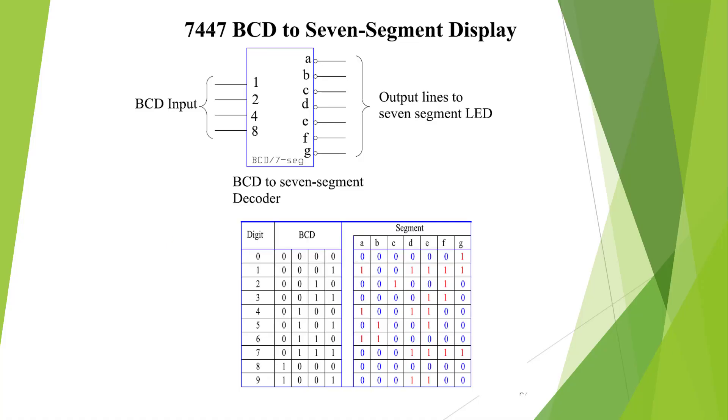This is the 7447 BCD layout for binary input, BCD 0 to 9, and we put the binary weighted positive values in here, and internally, it actually selects the segments which are required in order to display. It does display beyond 9, but it's got some strange characters that come out. It's basically designed for 0 to 9.